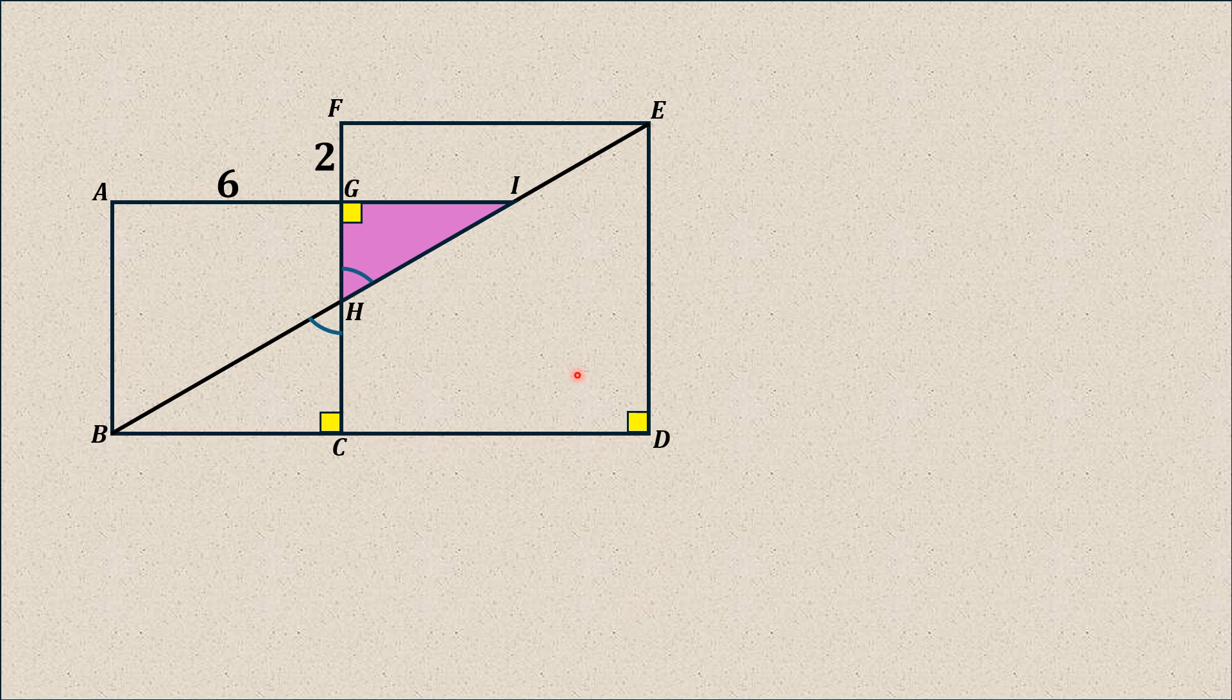Now, it means we have to find the area of this right triangle IGH, and we know that area of right triangle is equal to half times base into height, which is half times GH into GI. So we have to actually find GH and GI, and then we will substitute here to find the area of shaded region.